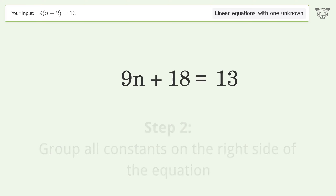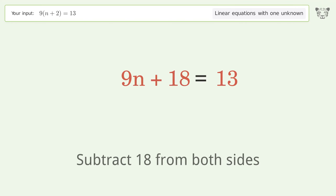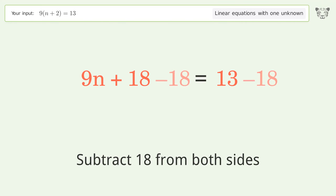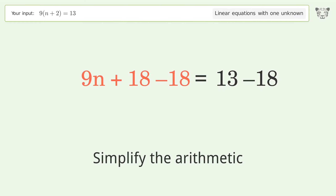Group all constants on the right side of the equation by subtracting 18 from both sides, then simplify the arithmetic.